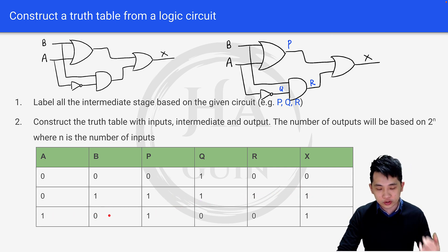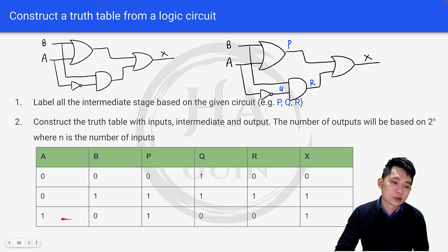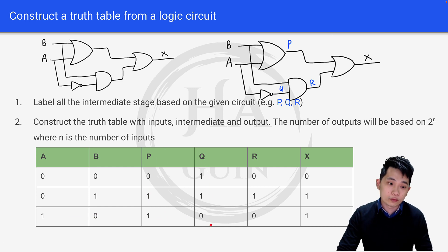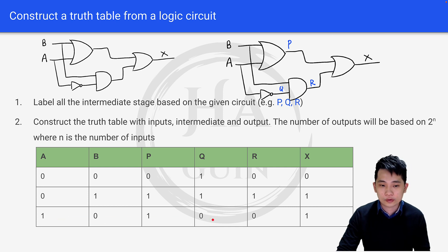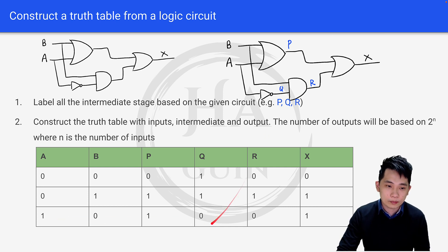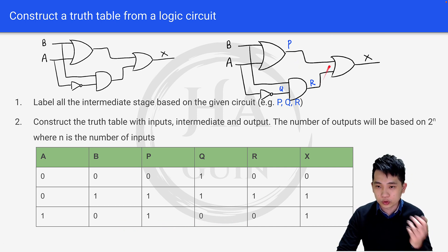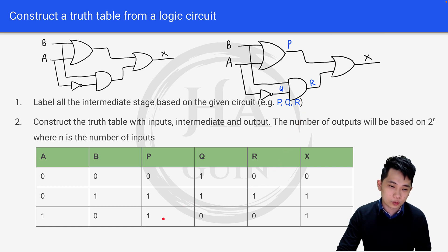Row 2 is A=1, B=0. P is 1 since 1 and 0 through an OR gate gives 1. Q is the inverse of A: 1 gives 0. R takes Q and B: 0 and 0 through an AND gate gives 0. Finally, P and R as input to the OR gate: 1 and 0 gives X=1.